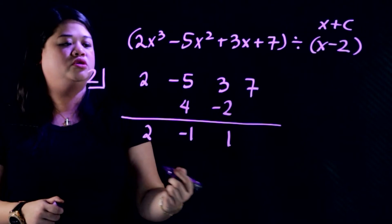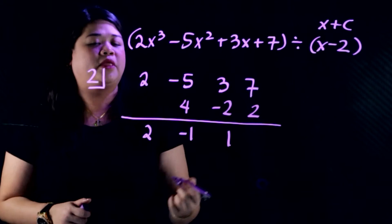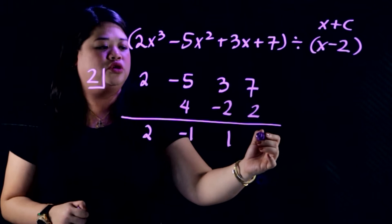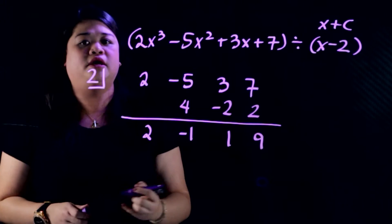And then 1 times 2, you'll get 2. When you add 7 plus 2, you'll have a 9.